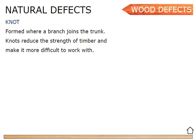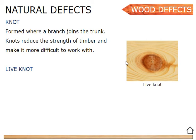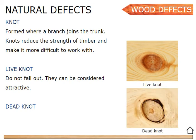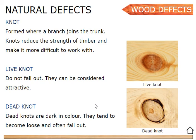Knots will reduce the strength of the timber and make it more difficult to work with. Now there are two types of knots. The first one is a live knot — a live knot is a knot that does not fall out, and some people would consider it to be attractive or nice-looking in the wood. The other type is a dead knot — that's when there's either an empty gap or you have a knot that, if you push your finger through it, would fall out. Dead knots are darker in color; they tend to become loose and will often fall out.